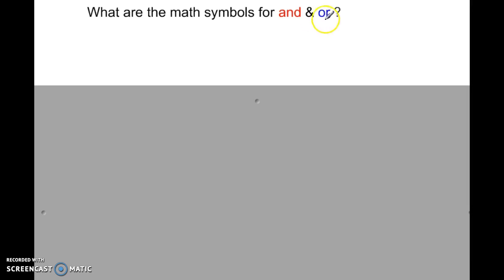Math symbols for AND and OR: the OR symbol looks like a U (union), and the AND symbol looks like an upside-down U (intersection, like a horseshoe).